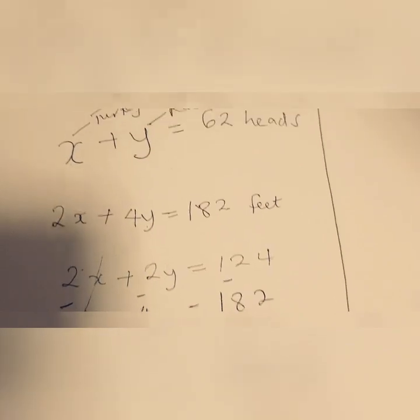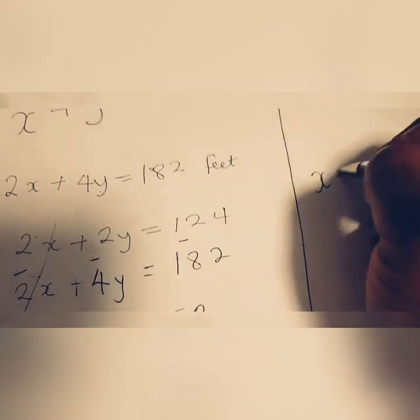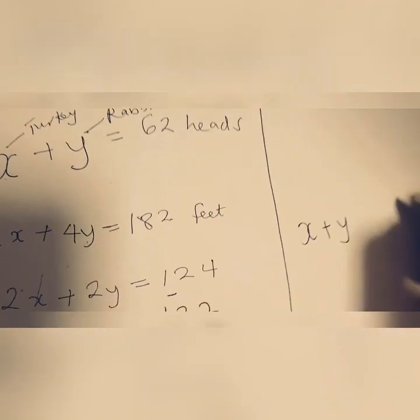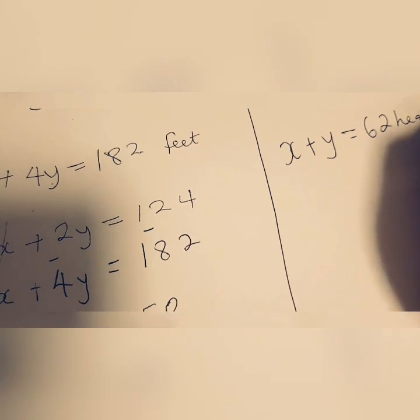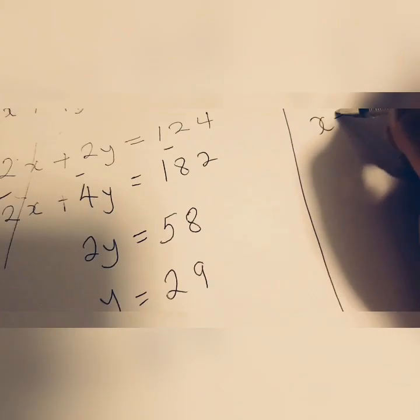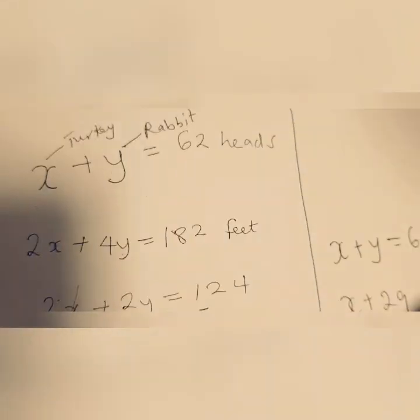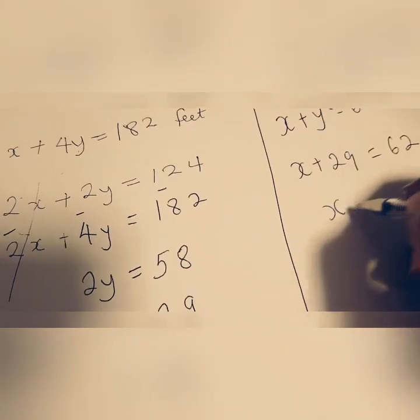Now we need to find the number of turkeys. The first equation, we said x plus y, which is the heads, is 62 heads. Now we know what our y is, which is 29. So x plus 29, remember the y is for the rabbits, equals 62 heads. What could x be?